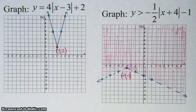So we have this point, 3, 2, and we have a slope of 4. So I go up 4 over 1, up 4 over 1.